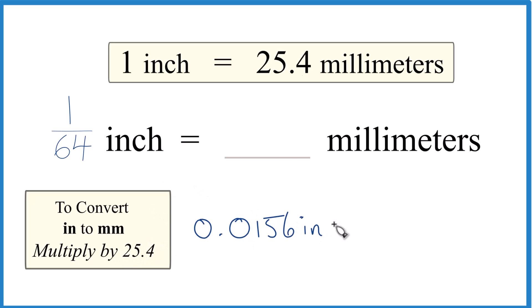And then I just multiply that times 25.4. And note that that's millimeters per inch. There are 25.4 millimeters in one inch. So now when I do the multiplication, that's nice. Inches cancel out. So my final answer will be in millimeters.